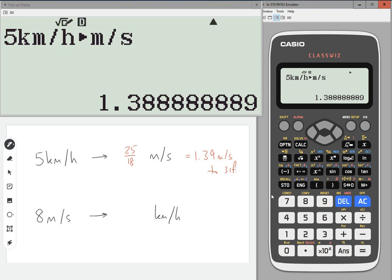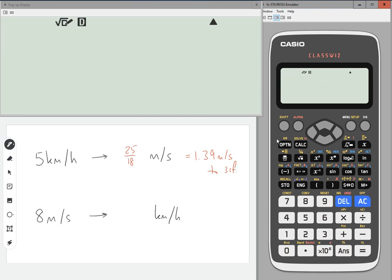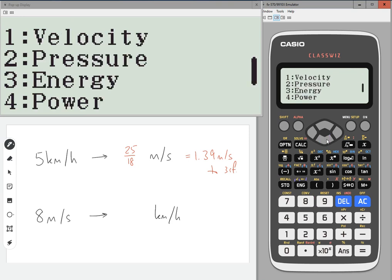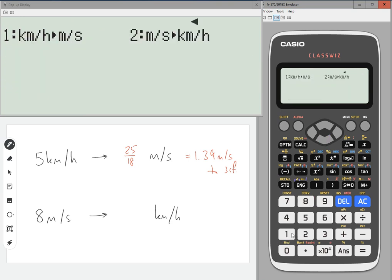Now if we want to go the other way, then shift 8, scroll down to velocity, then meters per second to kilometers per hour, so number 2.